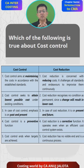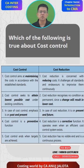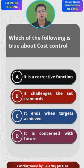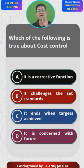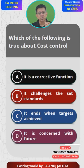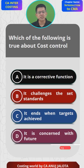Cost control ends when targets are achieved. Suppose my standard cost was 5 and actual cost is 5 — cost control is over. But cost reduction is a continuing process. Suppose standard cost was 5, I reduce it to 4.5, next year I would like to reduce it to 4. So it never stops — it is a continuing process.